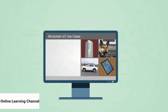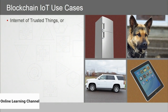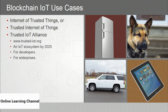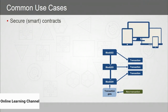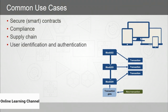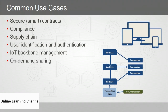There are proponents of IoT focusing on Internet of Trusted Things. One organization is the Trusted IoT Alliance, whose vision is for an IoT ecosystem by 2025, working with developers and enterprises. Common use cases for blockchain and IoT include secure or smart contracts, regulatory compliance, the supply chain, user identification and authentication, IoT backbone management, and on-demand sharing.